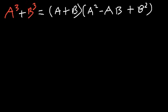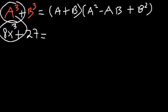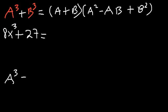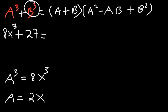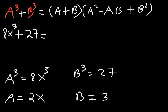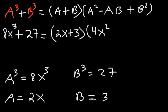Next example: 8x³ + 27. Here a³ = 8x³. The cube root of 8 is 2 and the cube root of x³ is x, so a = 2x. Since b³ = 27, b = 3. Using the formula: (2x + 3)(4x² - 6x + 9), where 2x² = 4x², ab = 6x, and b² = 9.